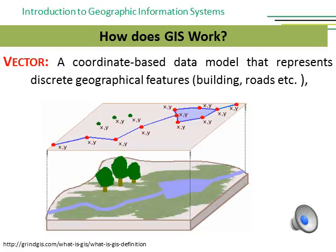The vector model is mostly used for representing discrete geographical features, such as buildings, roads, etc. In the vector model, the information refers to points, lines and polygons, that are encoded and stored as a collection of x-y coordinates. Vector models are used to store data which have discrete boundaries, like country borders, land parcels and roads.